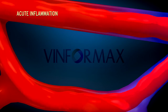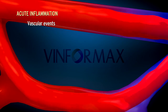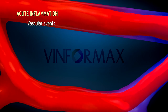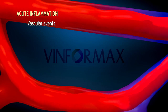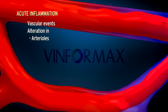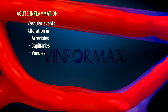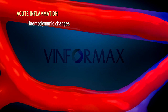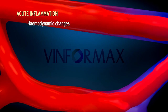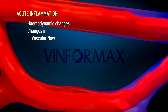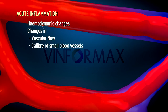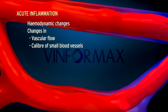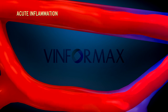Acute inflammation is a continuous process. It may be divided into two events: vascular events and cellular events. Vascular events: the earliest response to tissue injury is the alteration in the arterioles, capillaries and venules, resulting in hemodynamic changes and changes in vascular permeability. Changes in vascular flow and the caliber of small blood vessels in the injured tissue is the earliest feature of the inflammatory response.